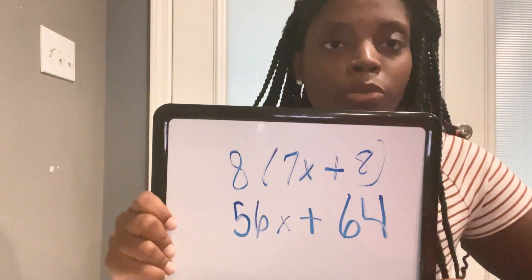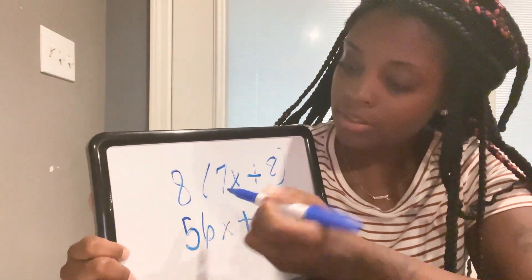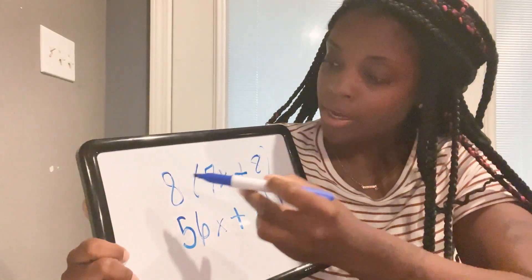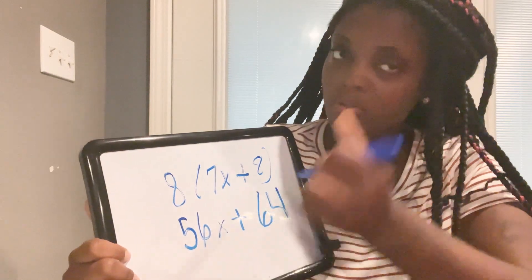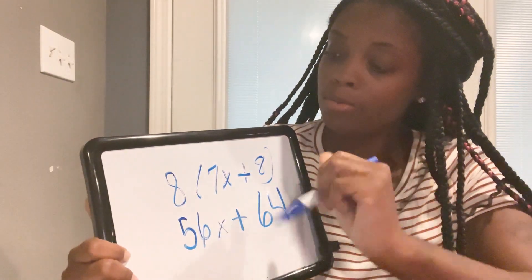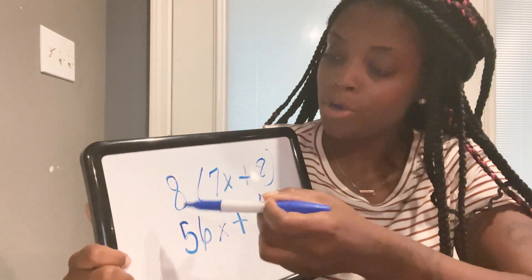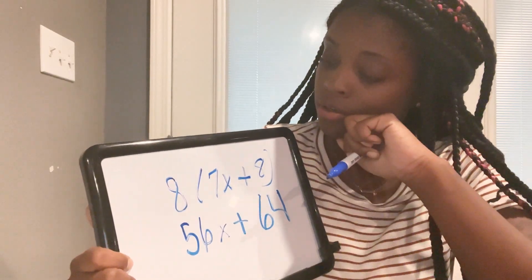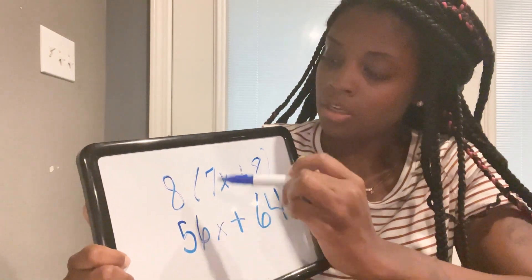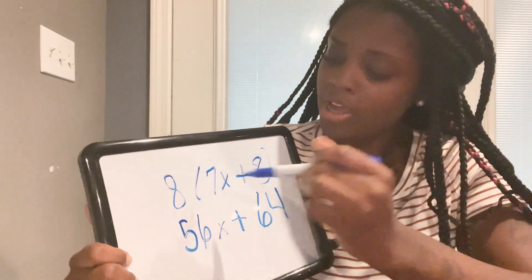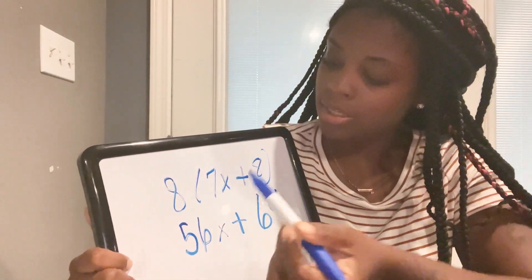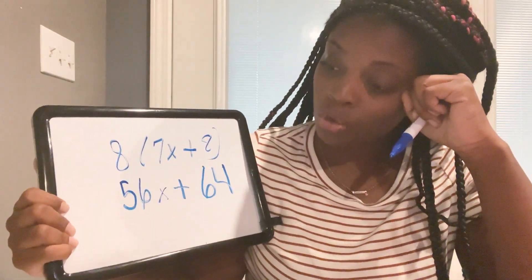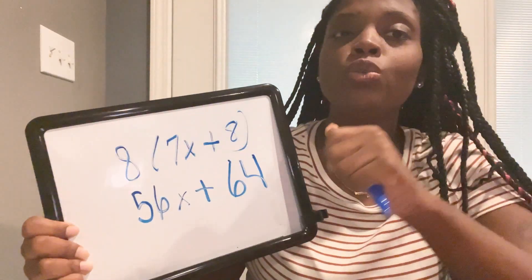We're going to distribute everything out. 8 times 7x equals 56x. Bring down your plus sign, and 8 times 8 equals 64. You distribute the 8 amongst every term inside the parentheses. 8 times 7 is 56 — keep the x — plus 8 times 8 equals 64. That is how you simplify this equation when they ask you to simplify.